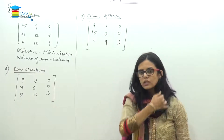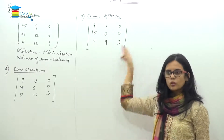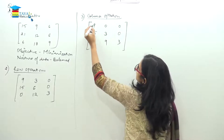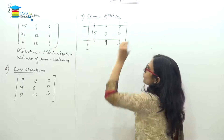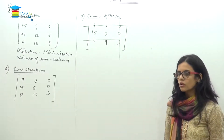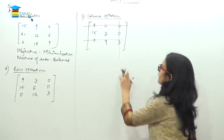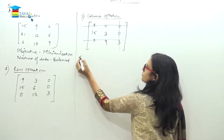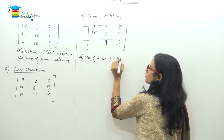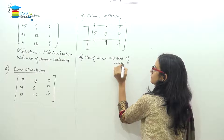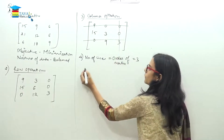Column operations are done. Now, on this same matrix, draw lines to cover all zeros — don't make a new matrix. To cover all zeros, minimum 3 lines are needed regardless of how you draw them. Since the number of lines equals the order of the matrix (both equal 3), this is the optimal solution.